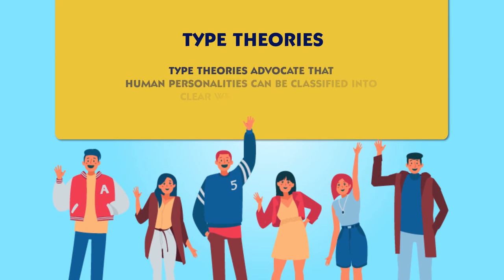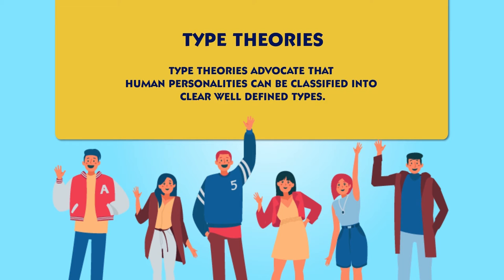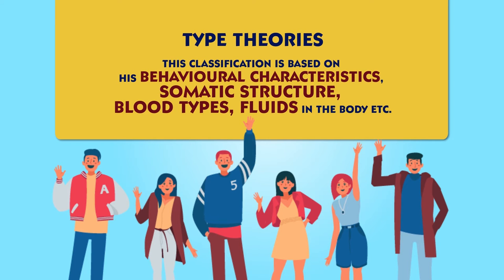Type theories basically advocate that human personalities can be classified into clear, well-defined types. That is, we can distribute people into different types which are well-defined. This classification is based on the person's behavioral characteristics, somatic structure, blood types and fluids in the body — that is, on the basis of how a person looks, what kind of fluids are present in abundance, or the blood types. Various psychologists have divided people into a number of types.